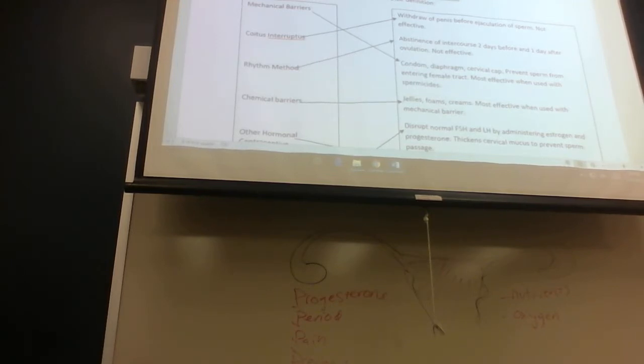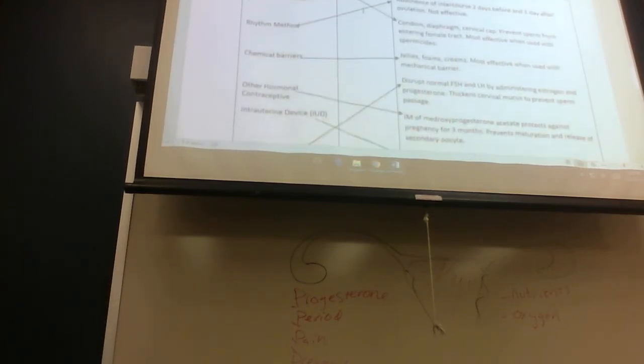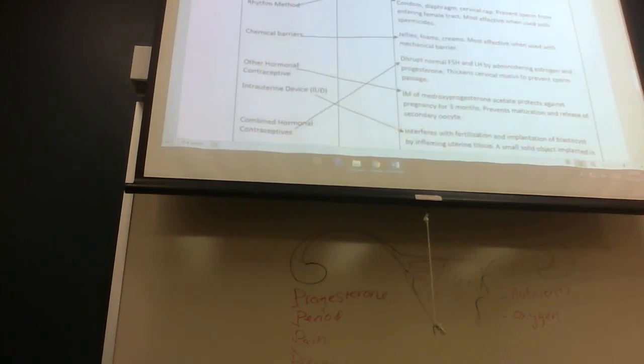Let's talk about contraception. There's various methods you can use, but somehow we're still having babies. It's because they're not really effective. The most effective is abstinence, but that's not really realistic. Mechanical barriers include the condom, diaphragm, cervical cap. They're just barriers. They prevent sperm from getting into the female reproductive tract. Mechanical barriers are most effective when used with spermicides. Spermicides are like creams or jellies that kill sperm.